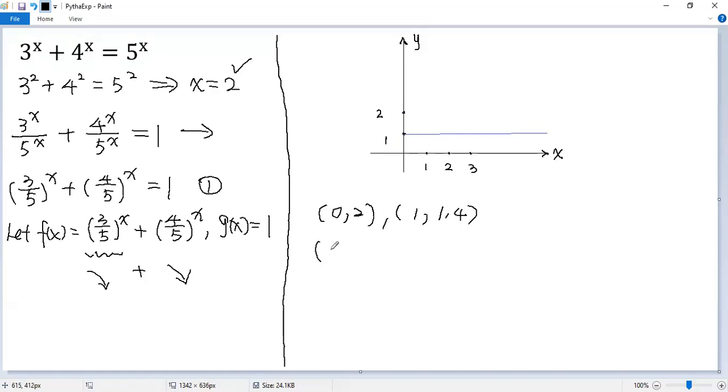When x equals 2, y equals 3 squared over 5 squared plus 4 squared over 5 squared, which is 25 over 5 squared, which is 1. Similarly, when x equals 3, y equals 0.728.